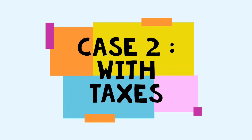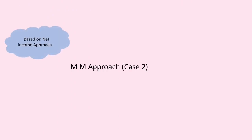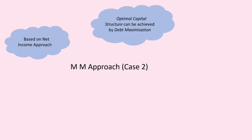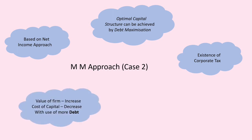Case 2 is the MM approach considering taxes. Proposition 2 is based on the net income approach, hence it is called the theory of relevance. Modigliani and Miller state that the optimal capital structure can be achieved by maximizing debt in the capital structure, recognizing the relevance of corporate taxes. The value of the firm will increase and the overall cost of capital will decrease with increased use of debt, on account of the deductibility of interest charges for tax purposes.